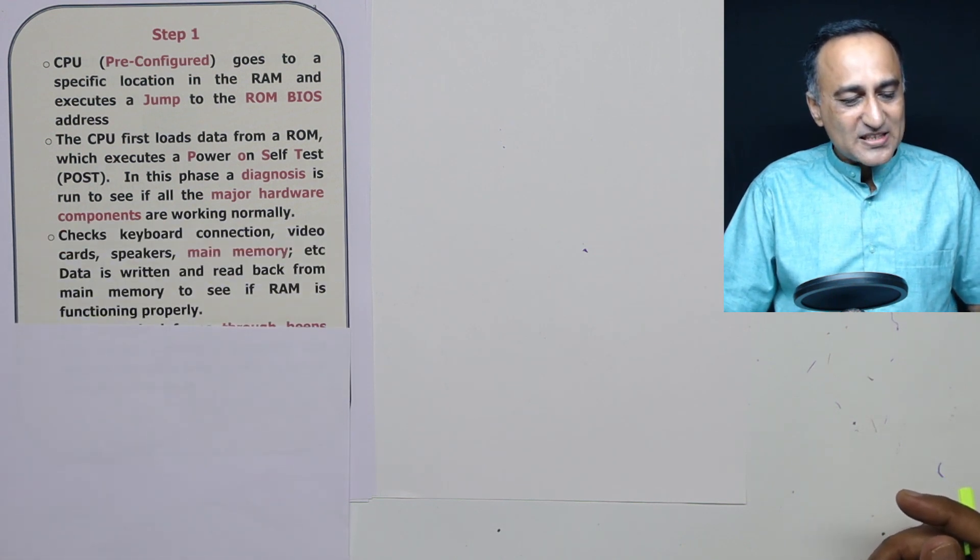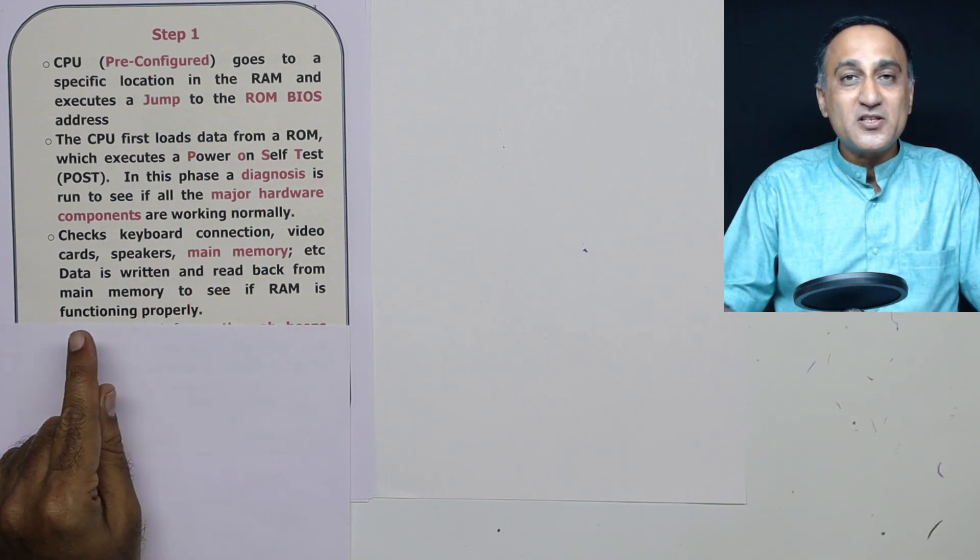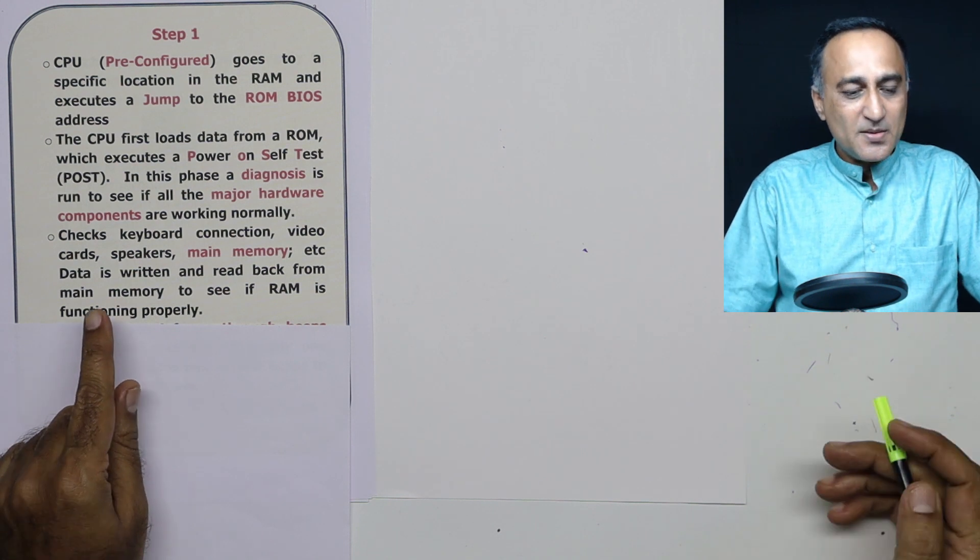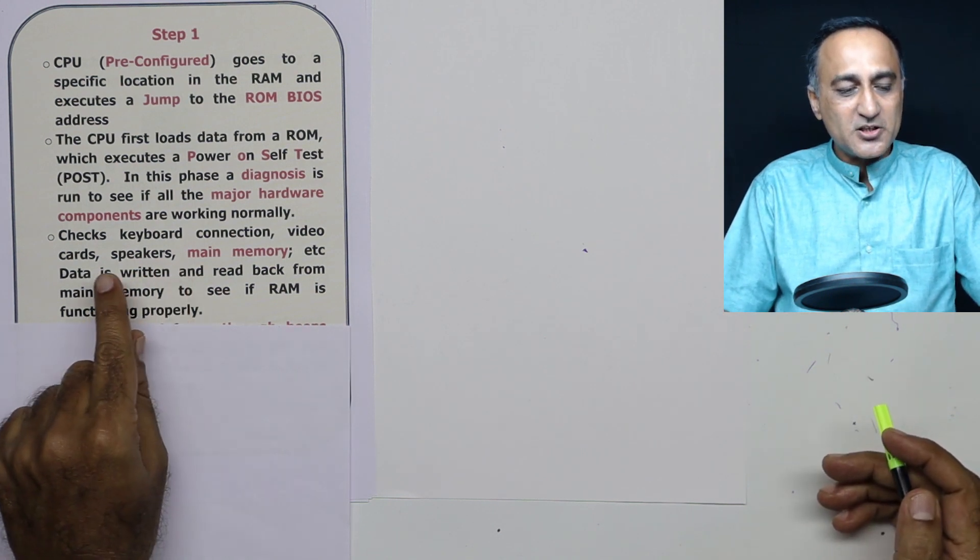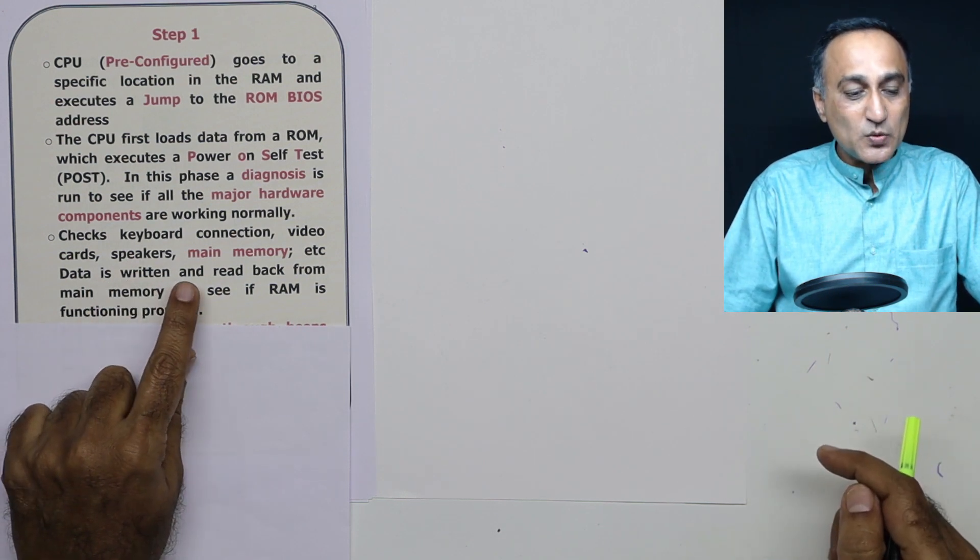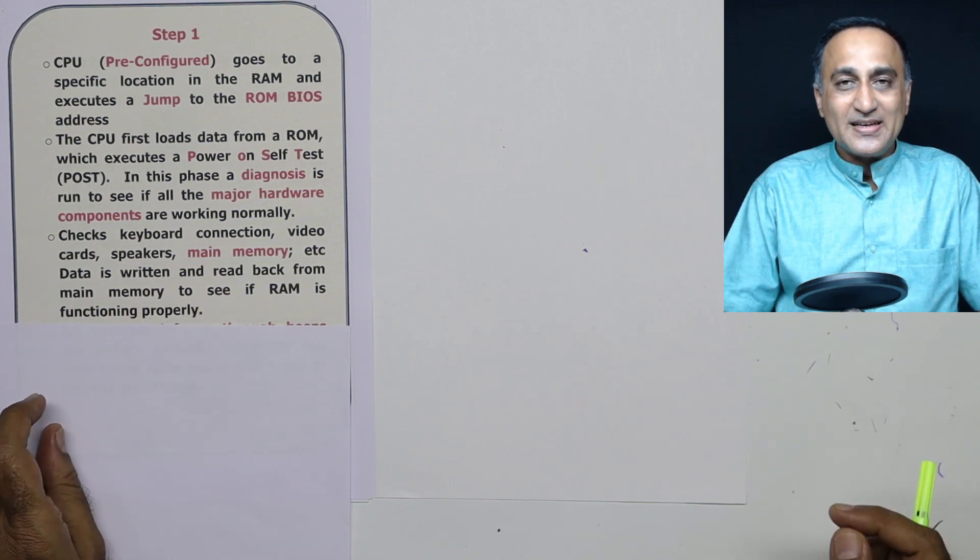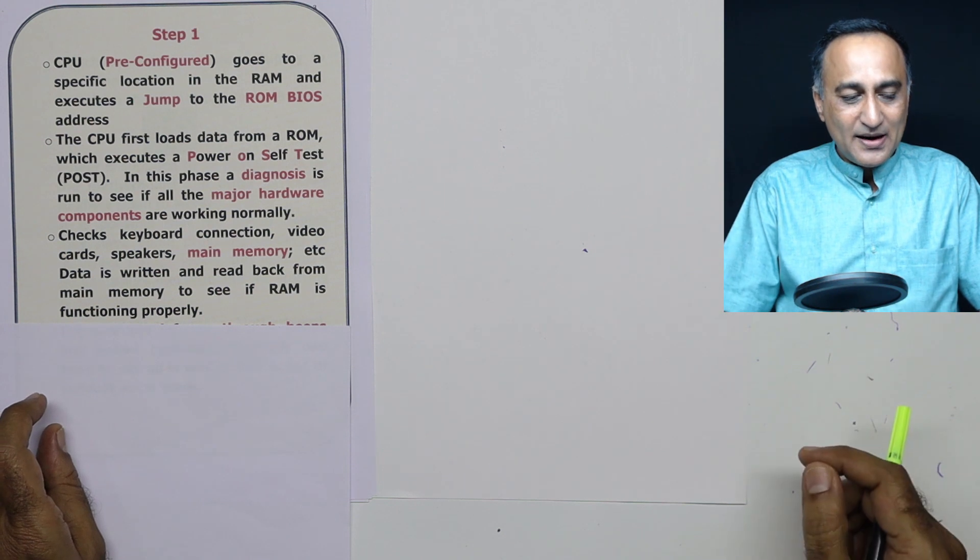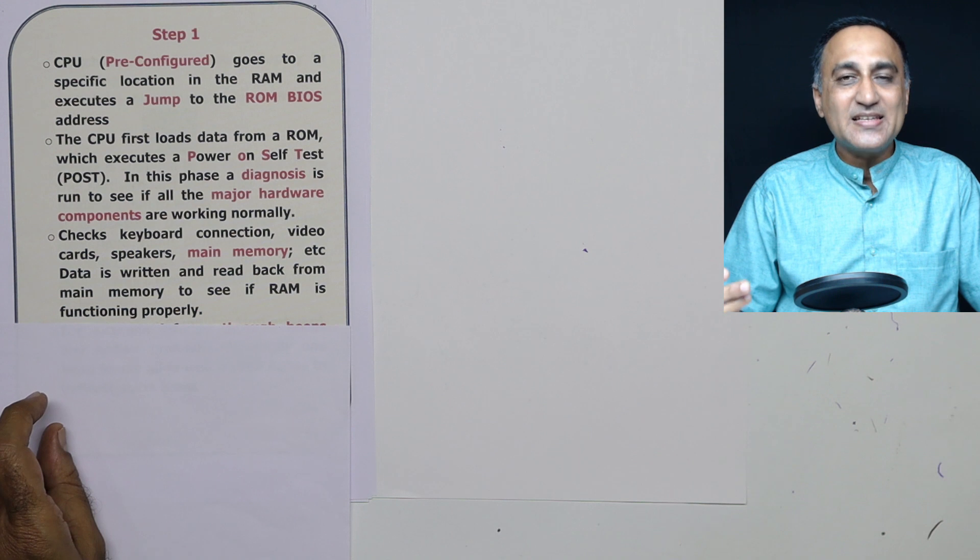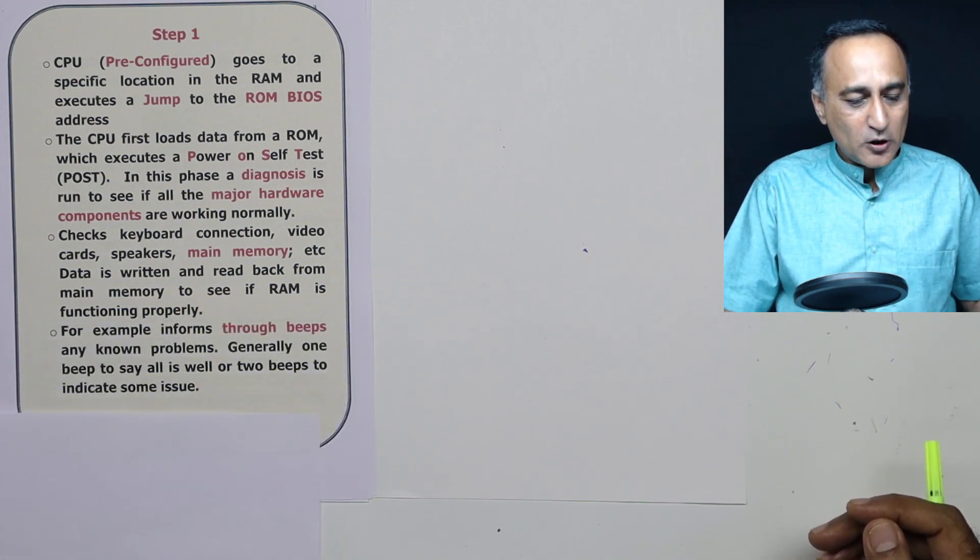So what happens in this stage is all the connections, important devices like your display monitor, keyboard, video card, speakers, the main memory and so on are checked. Now for main memory, what it does is it writes some contents to the RAM and reads it back and checks whether what it wrote is what it exactly got back. That's how it's able to verify whether the RAM is functioning properly or not.